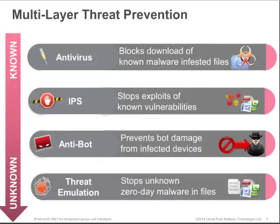An organization has to defend against all three types of malware — the known-knowns, the known-unknowns, and the unknown-unknowns. This requires several layers of protection. Tools like antivirus programs and intrusion prevention systems are good for stopping known malware and known vulnerabilities. They inspect incoming data against signature databases of known threats and stop them before they reach your network. Antibot programs detect bot-infected machines and prevent network damage from infected devices. And threat emulation stops unknown or zero-day malware from entering your network.